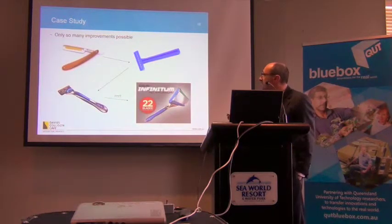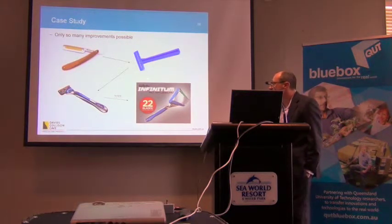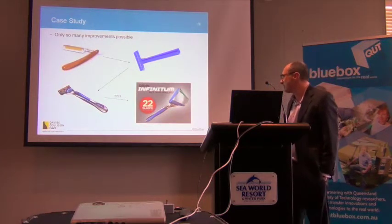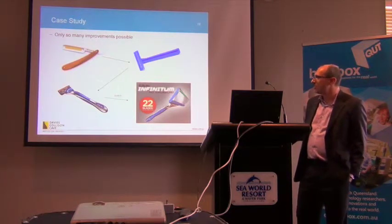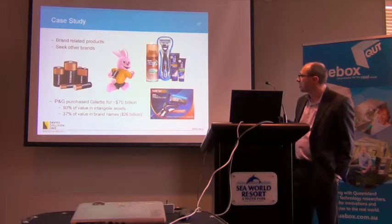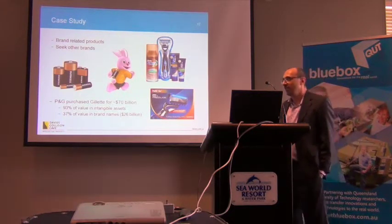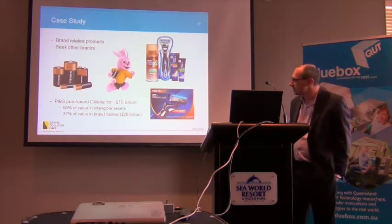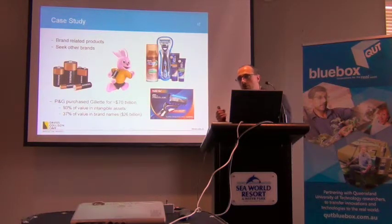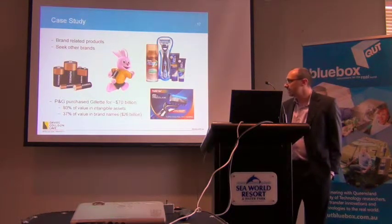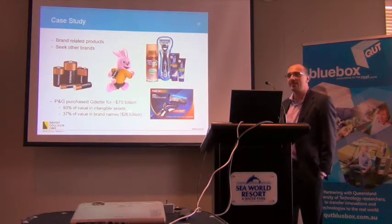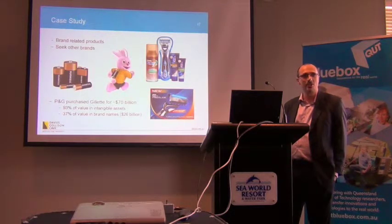Another example: razors. Used to be the old cutthroat, then the safety razor, then the many-bladed safety razor. There's only so far you can take these improvements. But despite that, they used this period of exclusivity on the many blades and various spring mechanisms to grow the Gillette brand — and then applied Gillette to lots of other products. The company that owned Gillette also owned Duracell. Procter & Gamble purchased Gillette as a company — the whole lot, lock, stock and barrel — for $70 billion. 37% of that, about $26 billion, was in the brand names — the trademarks. That's huge. Think about all that money just for the names.